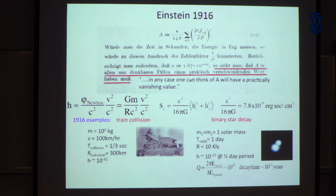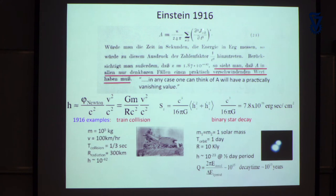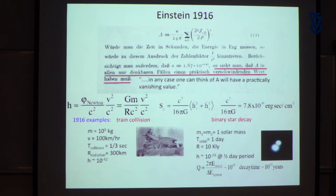At the end of the paper, Einstein says something quite dramatic. He refers to the equation for the power in a gravitational wave — involving time derivatives of the moment of inertia of a mass distribution — and says that quantity will have a 'practically vanishing value.' In other words, in that paper he says this will never be of any consequence.